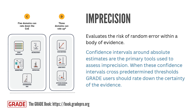Imprecision: This domain evaluates the risk of random error within a body of evidence. Confidence intervals around absolute estimates such as risk differences or mean differences are the primary tools used to assess imprecision. When these confidence intervals cross predetermined thresholds, GRADE users should rate down the certainty. Additionally, when large effects seem precise based on their confidence intervals, it is important to evaluate whether the evidence is sufficiently robust, depending on the total number of participants and events analyzed. If the effect estimates are based on a small number of participants or events, rating down due to imprecision may still be warranted.